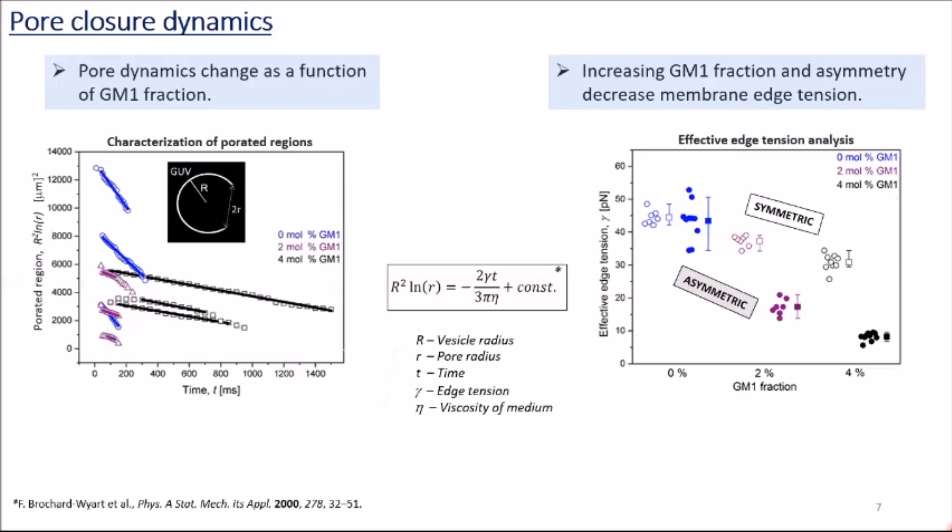In order to check this, we analyzed the permeability of GUVs by adding calcium dye to the external medium and monitoring their change five minutes after the macropore closure. This column shows GUVs right after the macropore closure, and this column shows GUVs five minutes after the macropore closure. According to the results, as GM1 concentration increased, GUVs were getting more permeable in time.